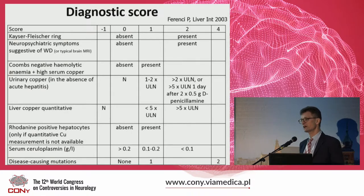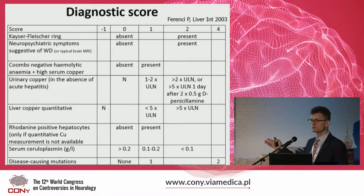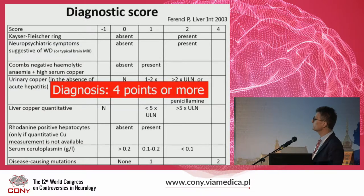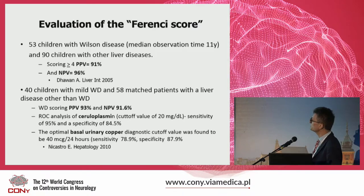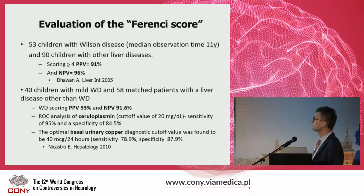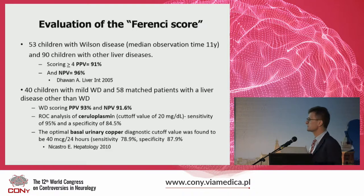The diagnostic score we use in pediatric age and in liver patients is the Ferenci score. You are aware that it combines clinical features and laboratory testing, and for four points or more we make the final diagnosis. In pediatric cohorts, the King's College group tested this score in more than 50 children and found it very sensitive, with very high positive and negative predictive values. An Italian group tested this score in 40 children and found it also very valuable. They also discussed individual biochemical tests like ceruloplasmin and basal urinary copper, which were not highly sensitive and specific; so in fact the Ferenci score seems very valuable in pediatric age.